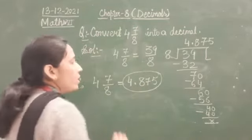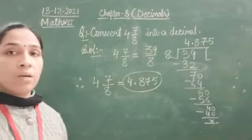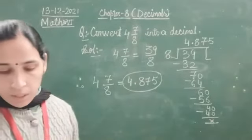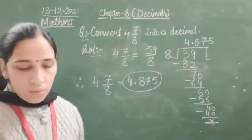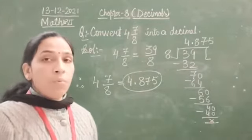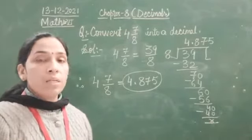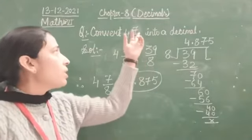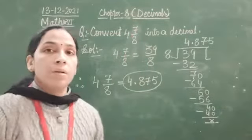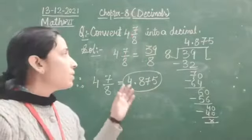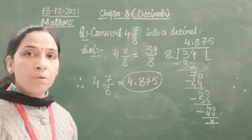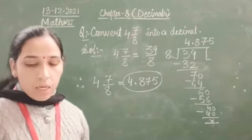4.875. One more way is to convert it — change only the fractional part into decimal form and then add it to 4. In that way also you can do it.